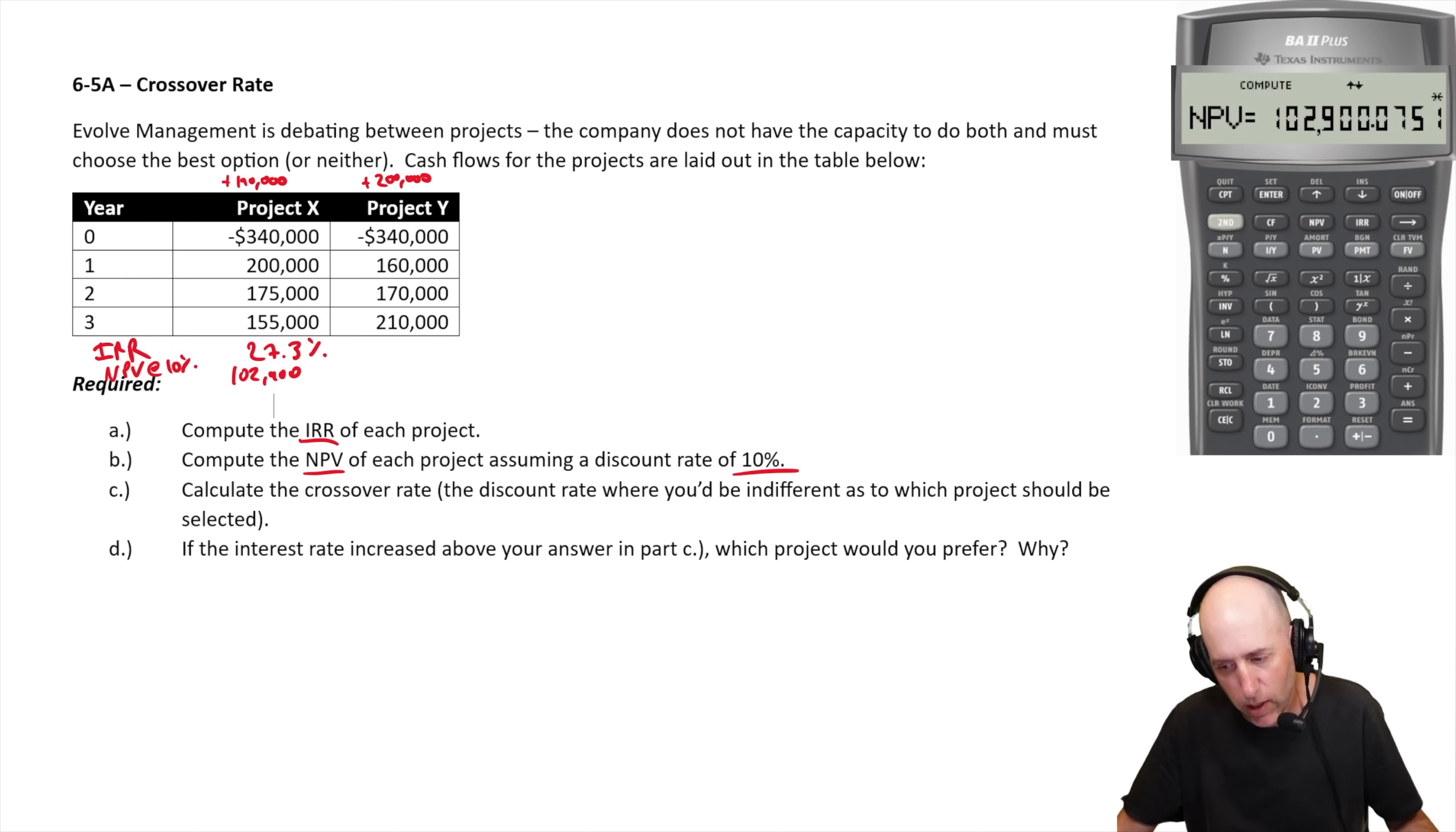Let's do the same thing for project Y. Click, clear. CF, second function, clear work. CF. 340 negative. Enter. Cash flow at time 1, 160. Enter. Down arrow, down arrow. Cash flow at time 2, 170, positive. Enter. Cash flow at time 3, 210, positive. Enter.